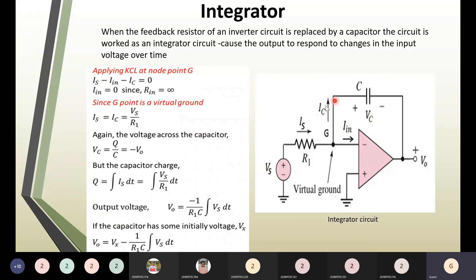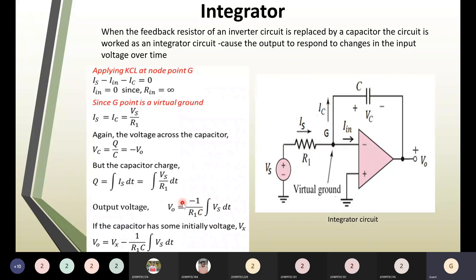To get the output expression for a circuit, we always use the golden rules of op-amp. Whenever one terminal is grounded, the other terminal also maintains the same ground potential — we call it virtual ground. Since the non-inverting terminal is grounded, the inverting terminal will also be at zero potential. Writing the nodal equation for this node gives an expression in terms of input and output. Rearranging gives V₀ = −(1/R₁C) × ∫Vs dt, where R₁C is the time constant of the integrator circuit.